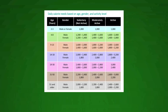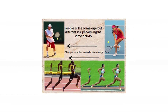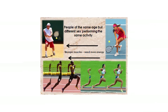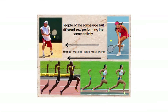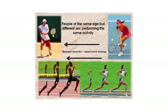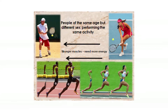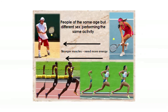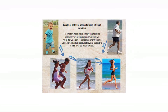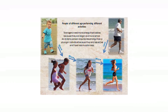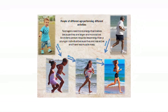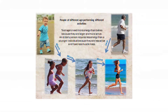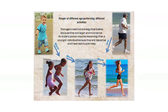Let us look at two people of the same age but different sexes performing the same activity. Men need more energy than women do, even when they are doing the same activity, because men have more muscle mass that uses more energy to do the same job that a woman is doing. Teenagers need more energy than babies because they are larger and more active. An elderly person requires less energy than a younger individual because they are less active and have less muscle mass.